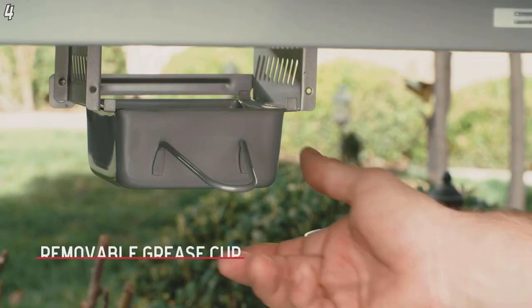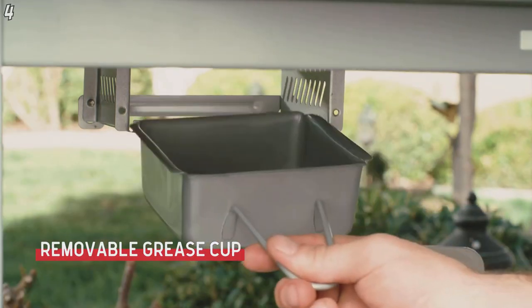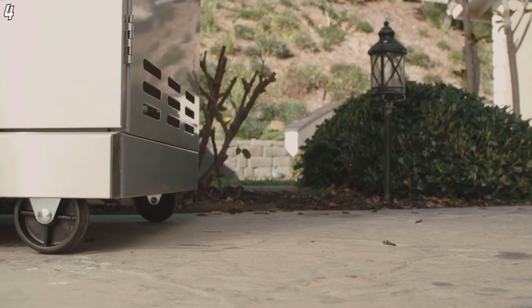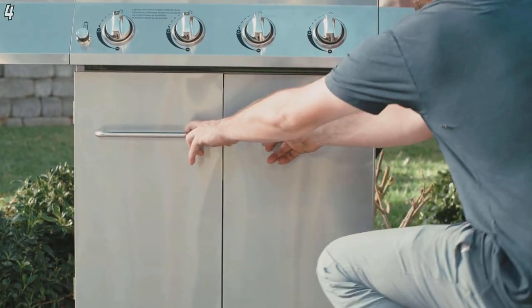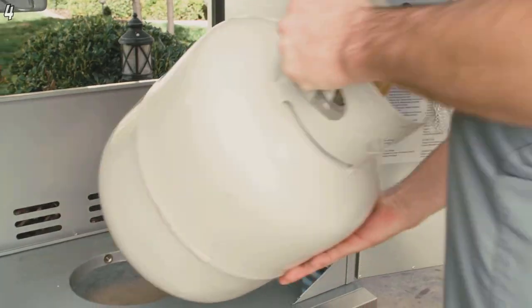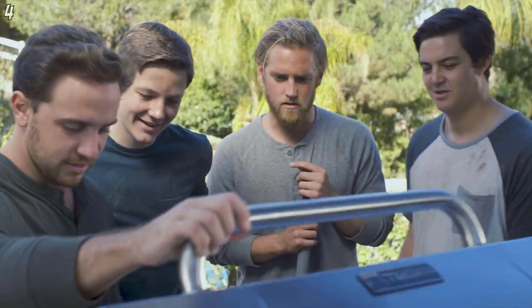And when it's time to clean up, a convenient front pull-out grease cup makes things easy. Finally, a smooth motion forecaster system makes moving your grill a breeze and an enclosed double-door cart keeps your propane tank safely tucked away.